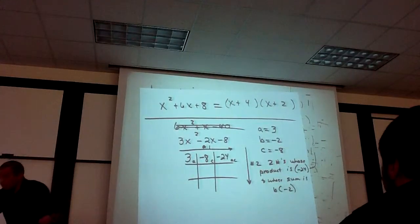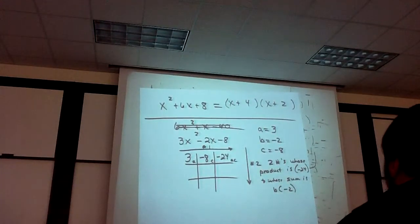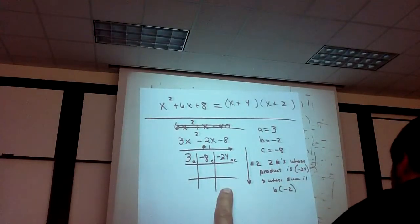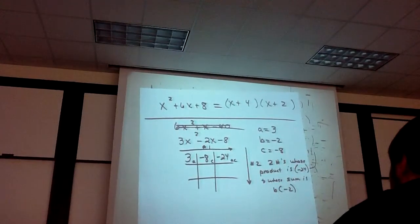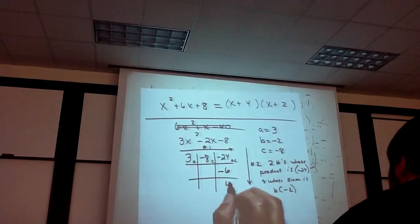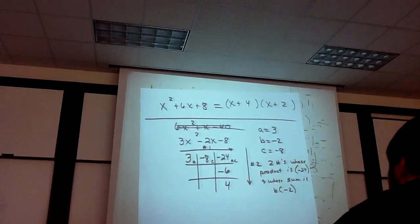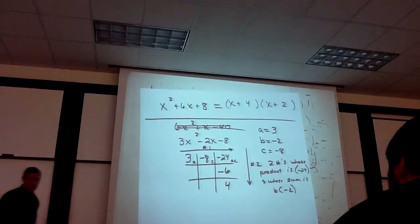So that wasn't too hard, right? And you can put them in either place. The sign, the negative goes with the 6. Negative 6 and positive 4. And it doesn't matter where you put them. You can put 4 and negative 6 if you want. It doesn't matter.